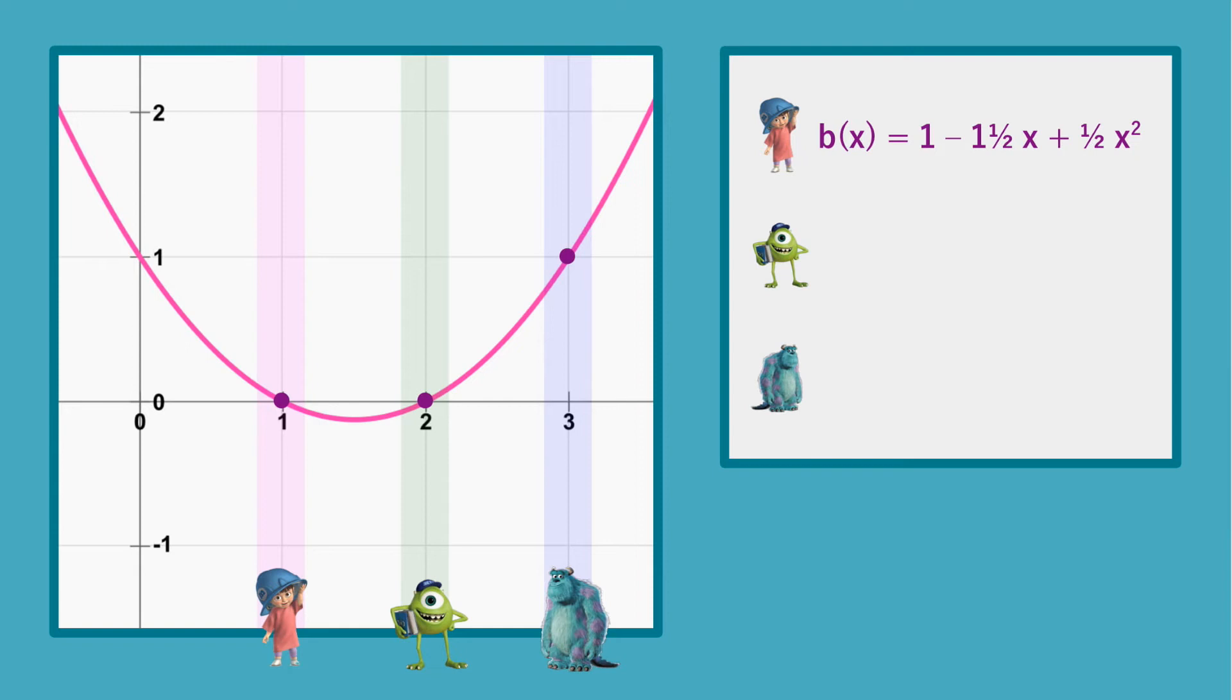It is also important that the other parties are well behaving and do not reveal to each other the shares they got from Boo. At this point in the protocol, secret sharing guarantees that even if Mike and Sully put their shares together, not knowing Boo's share means that it is equally likely that she voted 0 or 1.